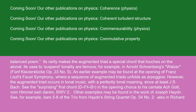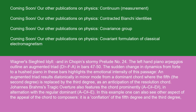Other examples may be found in the work of Joseph Haydn — see for example bars 5–8 of the trio from Haydn's String Quartet op. 54 no. 2 — also in Richard Wagner's Siegfried Idyll, and in Chopin's stormy Prelude No. 24. The left-hand piano arpeggios outline an augmented triad D#-F#-A# in bars 47–50. The sudden change in dynamics from forte to a hushed piano in these bars highlights the emotional intensity of this passage.